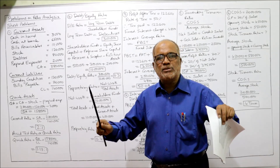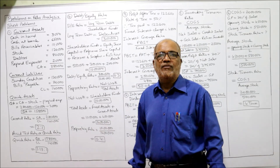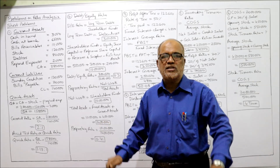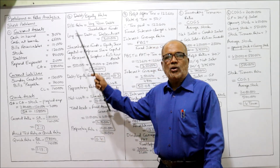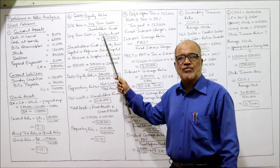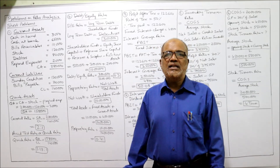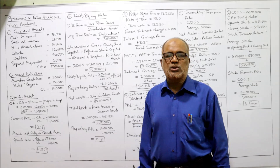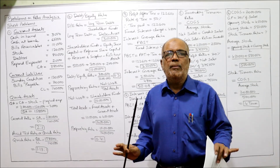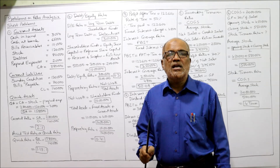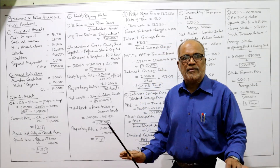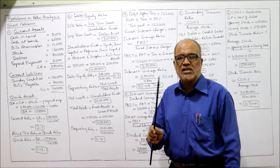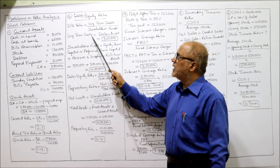Long-term debt includes debentures, bank loans, and other long-term loans. In our problem, only debentures are given, so long-term debt equals debentures — 3 lakh. Shareholders' fund equals equity share capital plus preference share capital plus reserves and surplus minus fictitious assets. Fictitious assets include preliminary expenses, discount on issue of shares or debentures, and profit and loss account debit balance.